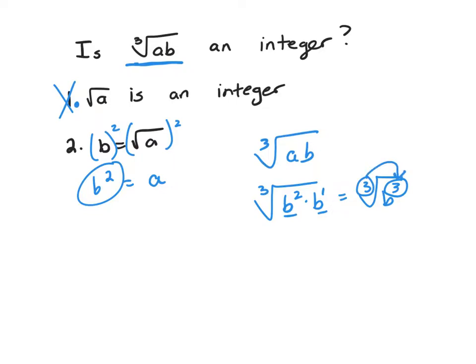So bring out however many times this 3 will go into that 3. Three goes into 3 one time. There was no remainder, so there's nothing left underneath the radical.